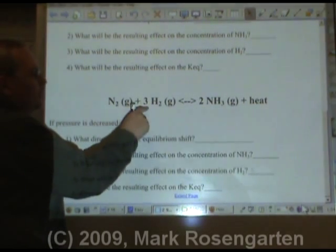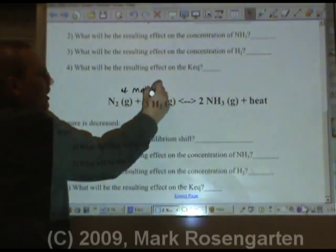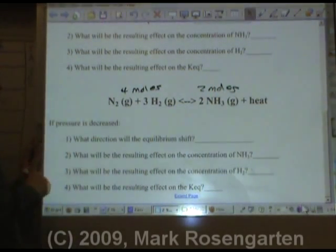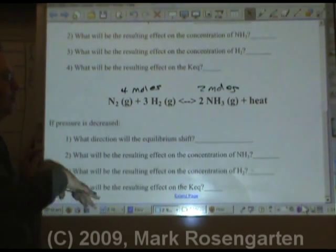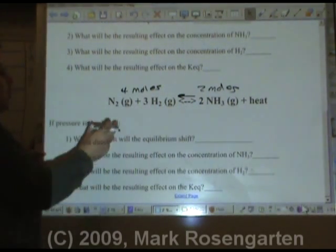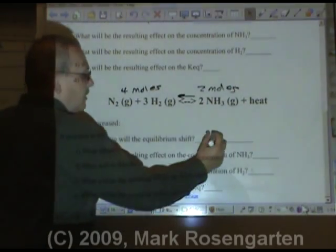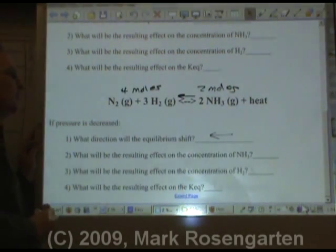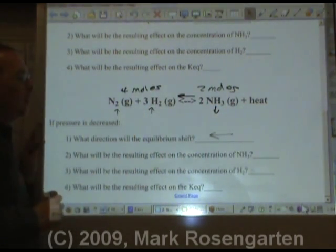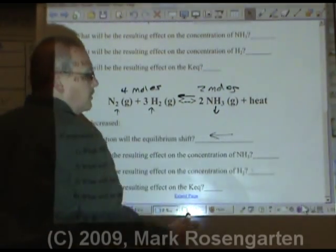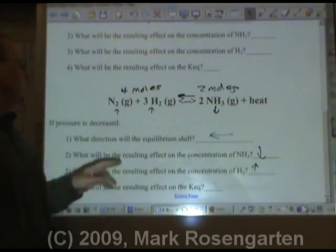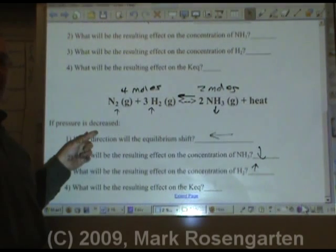Again, this side has 1 + 3 = 4 moles of gas, this side has 2 moles of gas. If you decrease the pressure, the equilibrium is going to bring that pressure back up by shifting to the side that has more gas on it. More gas, more pressure — we reverse the stress, reverse the shift. As a result, you're going to use up whatever you're shifting away from and make more of whatever you're shifting towards. Stress, shift, change in concentration.